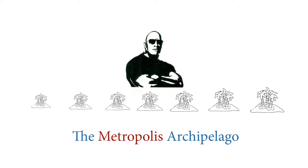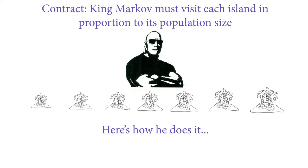Before we get into the details, let's think of an allegory. Imagine an Oceanic king, a benign monarch named King Markov, ruler of the Metropolis Archipelago. This archipelago has a number of islands of different sizes with different population sizes on them. As a benign monarch, King Markov has a contract with his people that he will visit them in proportion to the population sizes of the islands. His advisors have figured out a way he can do this without any kind of calendar schedule, because King Markov likes to live free — he's a bit of a bohemian.